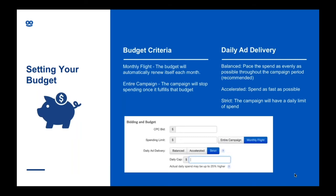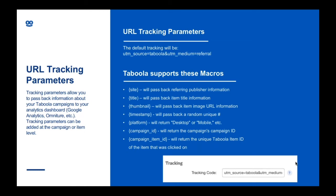The accelerated option means you'll spend as fast as possible. Tracking parameters allow you to pass back data to Google Analytics or any other tracking dashboard you might use. Here's a selection of UTM parameters you can use — the source is Taboola and the medium is Referral by default. One that's really popular with our clients is Site Passback, which passes back all of the sites into Google Analytics so you can see stats like bounce rate and time on site for each site. That means you can increase bids on sites where you had good results or decrease bids if they weren't up to what you wanted.